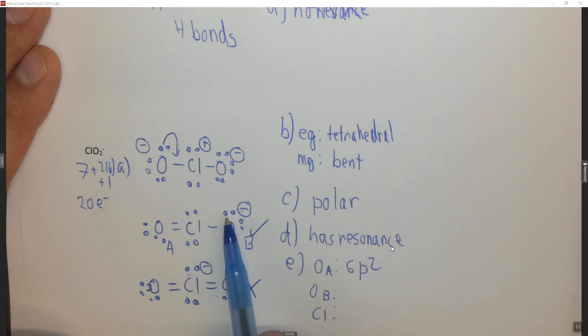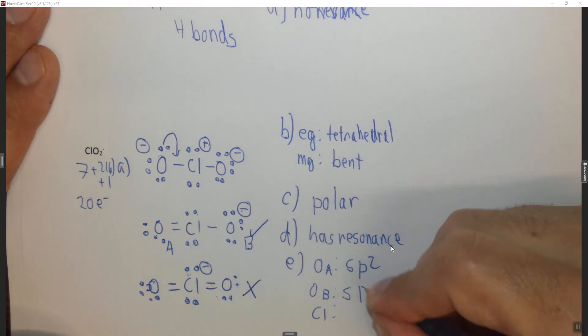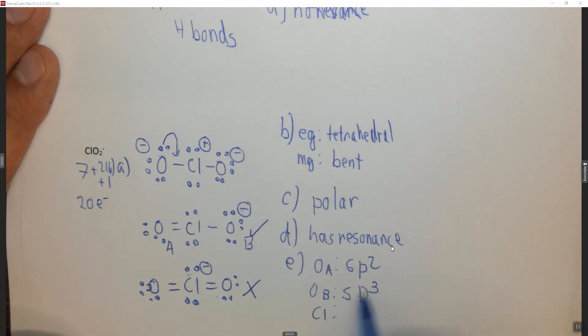Oxygen B, in this case, has one, two, three, four domains, so it's going to be SPPP or SP3, total of four orbitals. Chlorine has one, two, three, four domains, so it is also SP3.